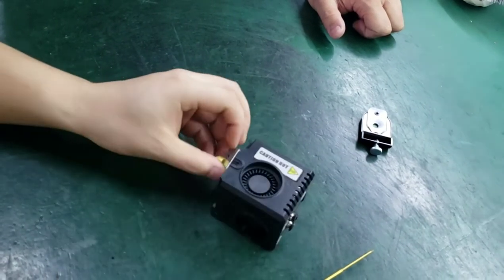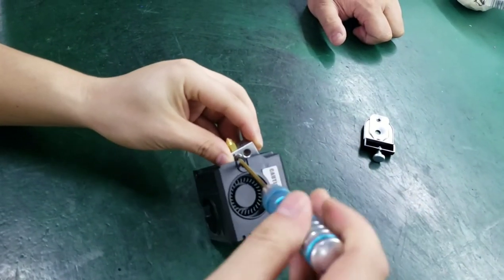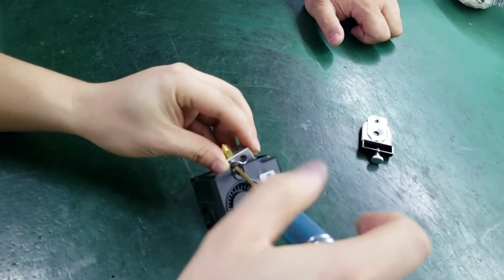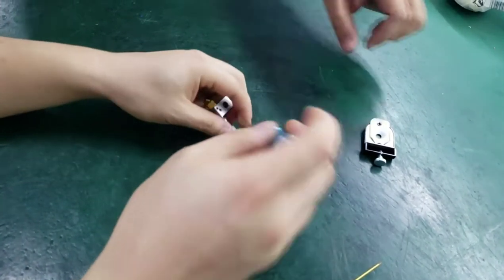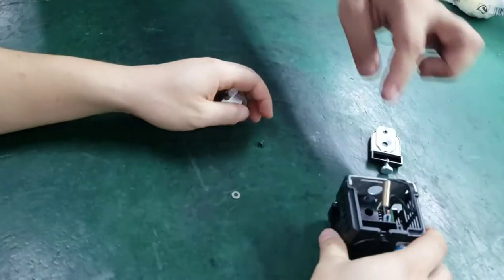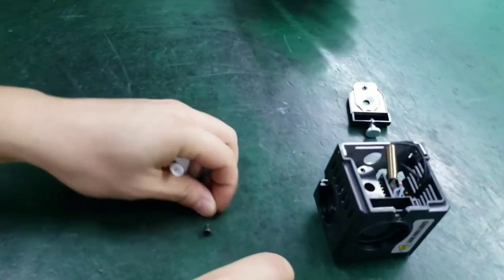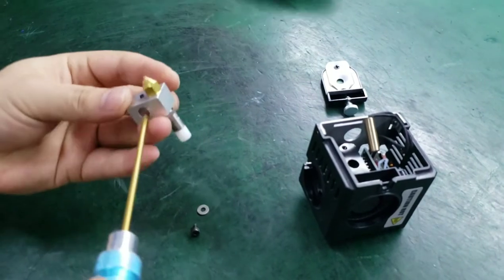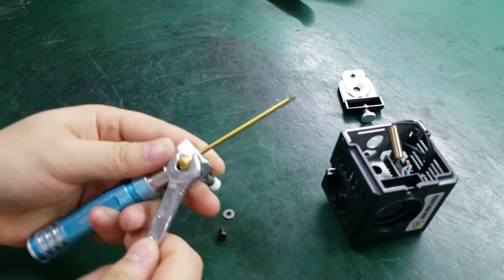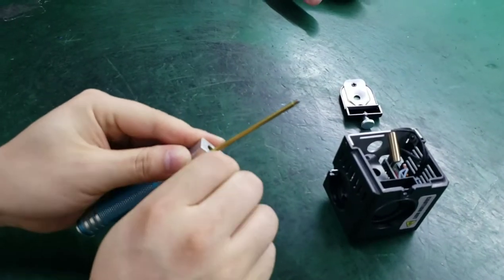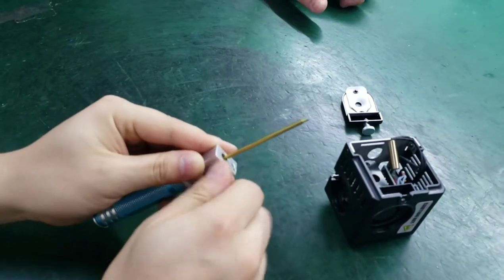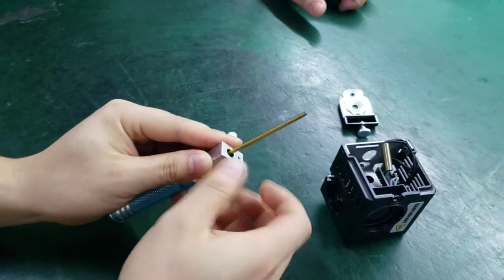And then you can loose and take off the heating tool, then the thermistor. By this way, you already take off the hot end. And then use the Allen key so you can disassemble the nozzle.